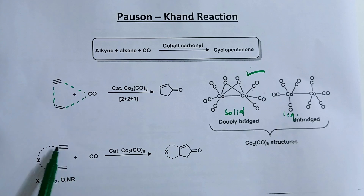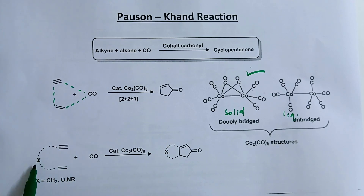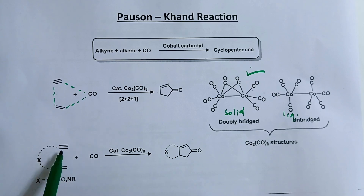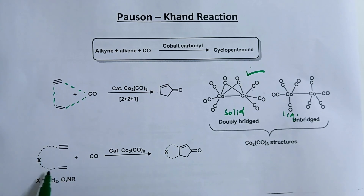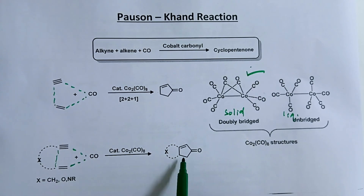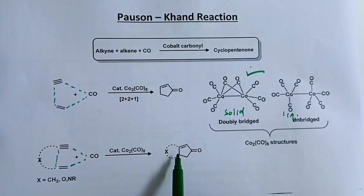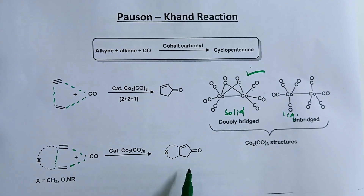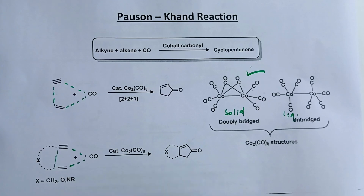The same reaction can take place intramolecularly as well. X indicates carbon, oxygen, or nitrogen — whatever the linking atom. Alkyne and alkene are connected through a chain, so you get cyclopentenone fused with another ring. This is all about intramolecular Pauson-Khand cycloaddition.